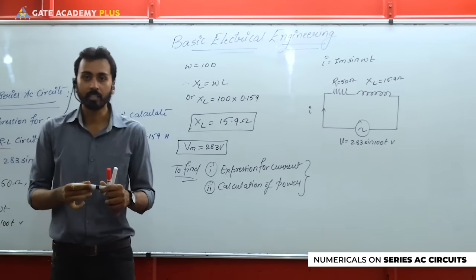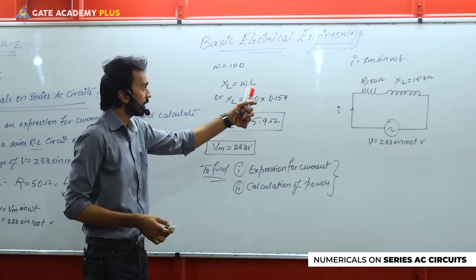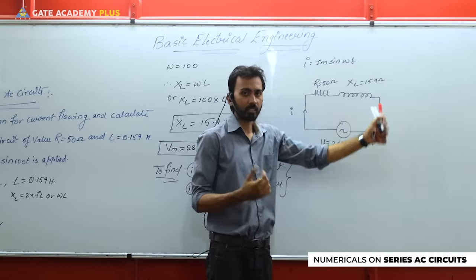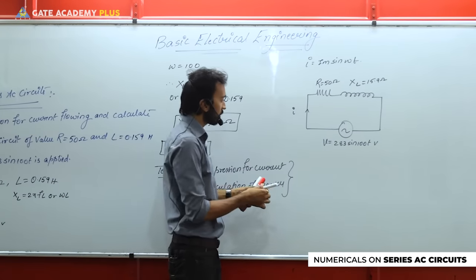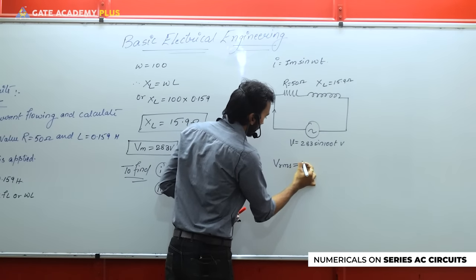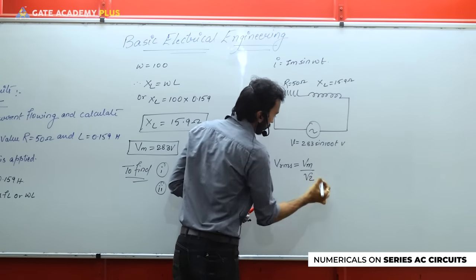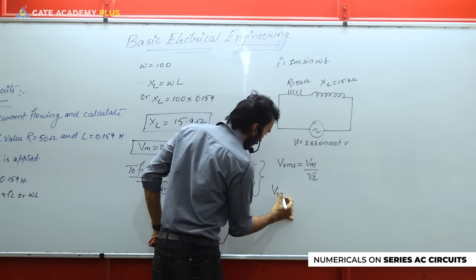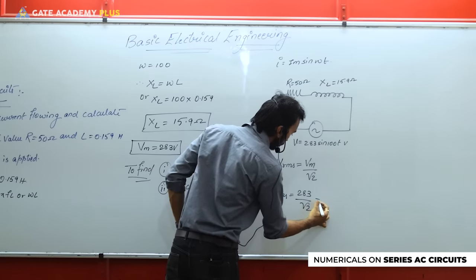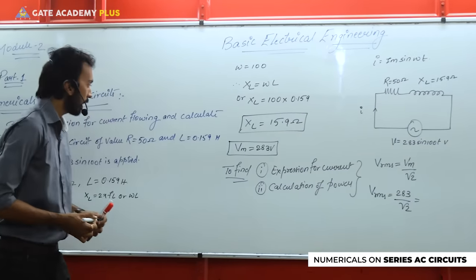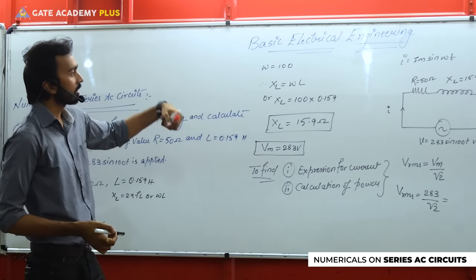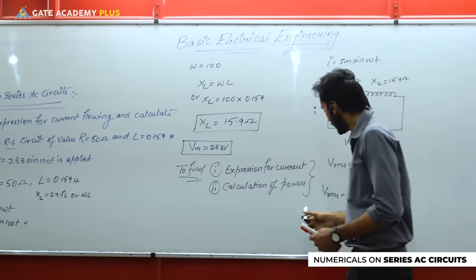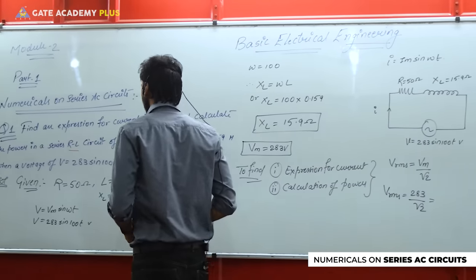Starting with Vrms: Vrms = Vm / √2 = 283 / √2. This gives us Vrms. Once we have Vrms, we can find Irms if we also know the total impedance Z. That is why we calculate Z next. The formula is Z = √(R² + XL²). For this circuit with only R and inductive reactance: Z = √(50² + 15.9²).